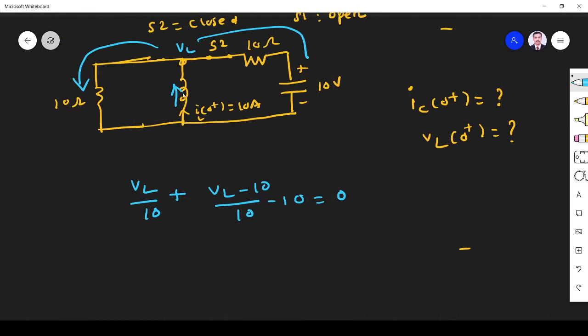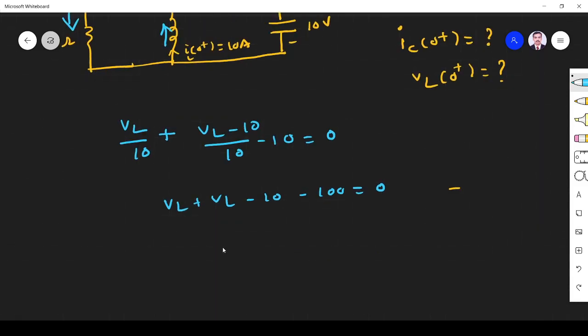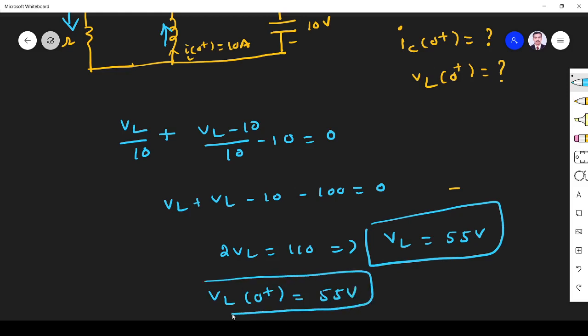So 10 ampere incoming current, minus 10. If you have any doubt, please refer my video on node analysis. So it indicates V_L plus V_L minus 10 minus 100 equals 0. This indicates 2V_L equals 110. So V_L is 55 volt. So the first thing we got is V_L(0+), voltage across inductor, is 55 volt.